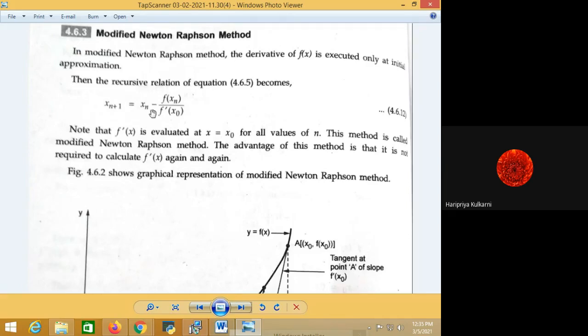Formula-wise, this is the change, and therefore it is called the Modified Newton Raphson method. The main advantage of this method is that you don't require to calculate f dash of x every time again and again. Once you calculate it for your iteration number one, it is going to remain the same throughout all the iterations.